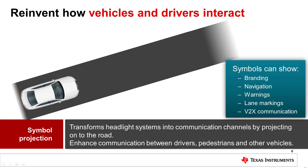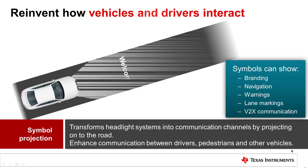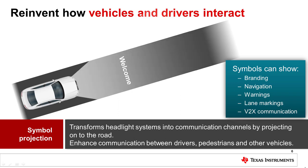Only the highest resolution makes symbol projection possible. Symbol projection enables welcome messages to the driver, differentiated branding, navigation, warnings, and other vehicle-to-everything, or V-to-X, communication to be conveyed on the road. Here, an arrow and distance are projected onto the road to indicate where a turn is located.